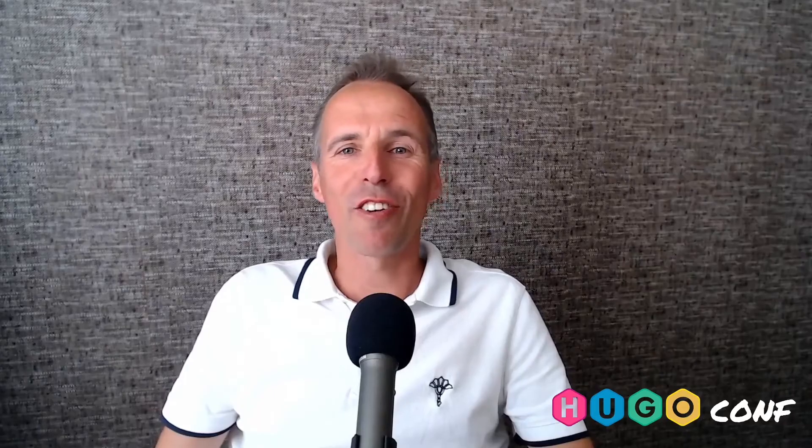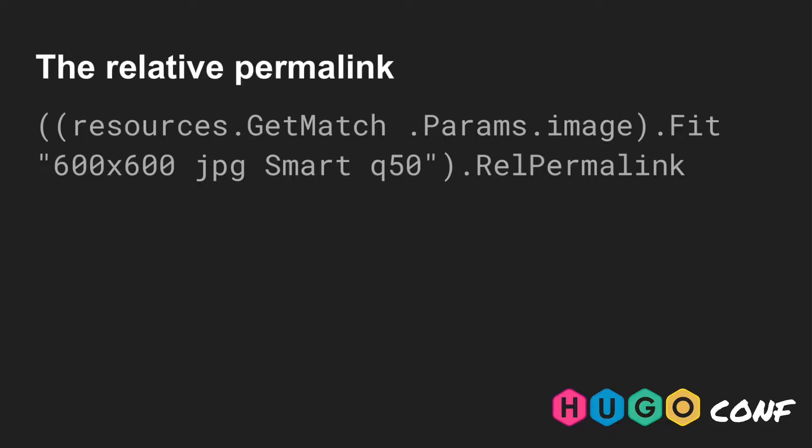Finally, you probably want to get the relative URL to this image. You can get this by adding .relPermalink and wrapping the whole thing into brackets like this. This code will result in a URL that points to a resized version of the original image. But if your original image does not exist anymore, your code will fail and Hugo will throw an error. Therefore, it is smart to check the existence of your desired resource. Wrap resources.getMatch in an if statement.